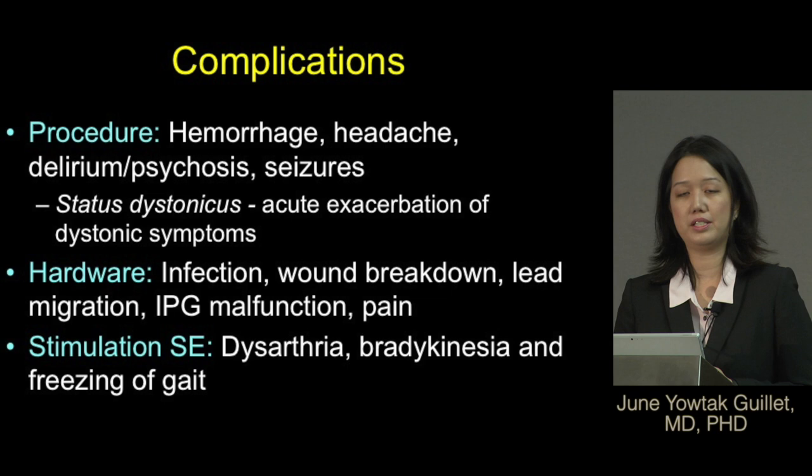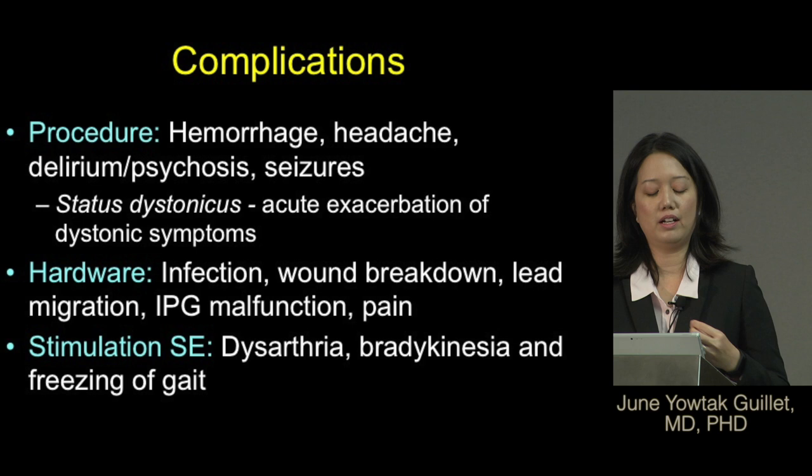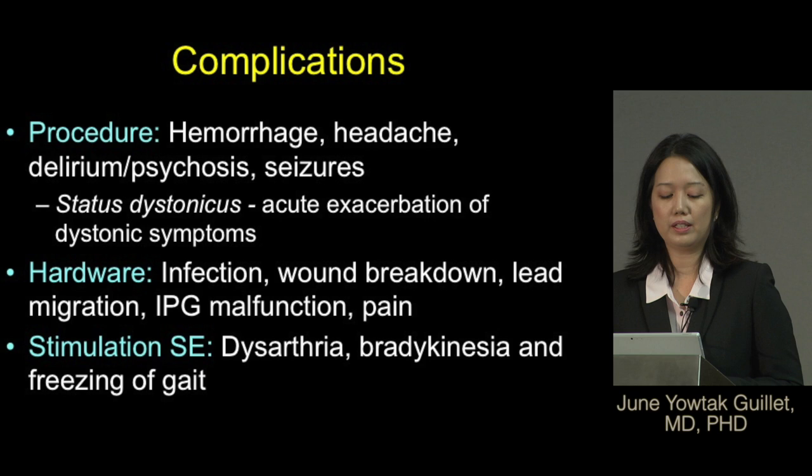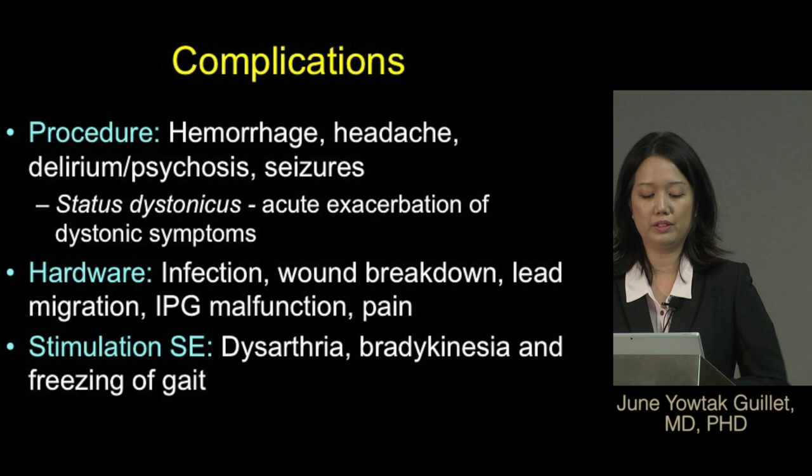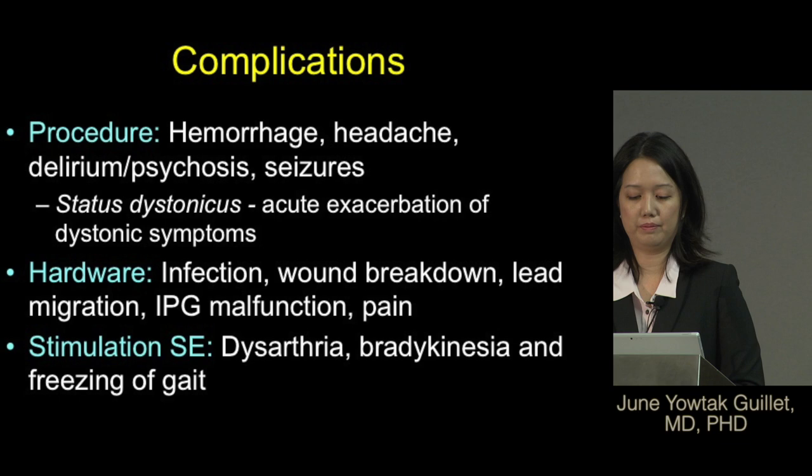The complications for this surgery are threefold: procedural, hardware, and stimulation complications. Dystonia specifically can have a rare complication called status dystonicus — an acute exacerbation of dystonic symptoms — which has been described in the literature. Additionally, some patients who undergo GPI DBS can develop dysarthria, bradykinesia, and freezing of gait.